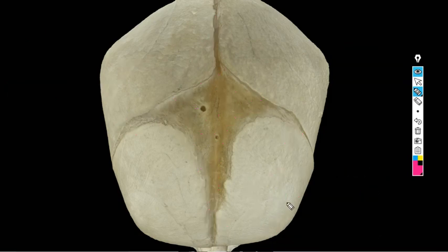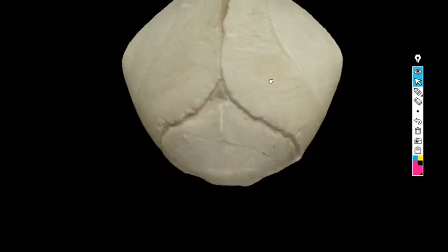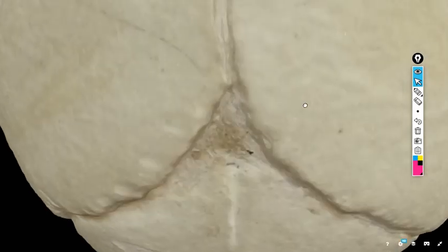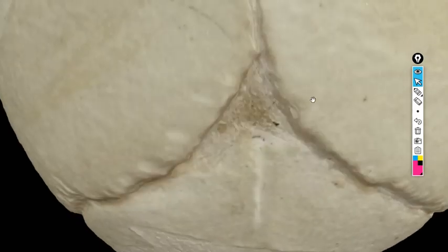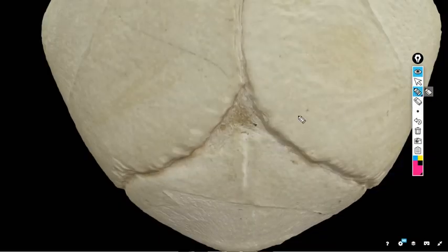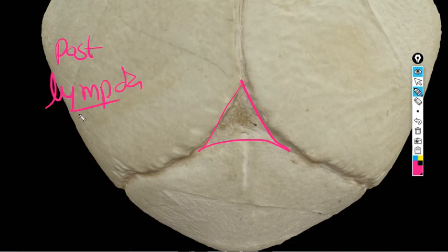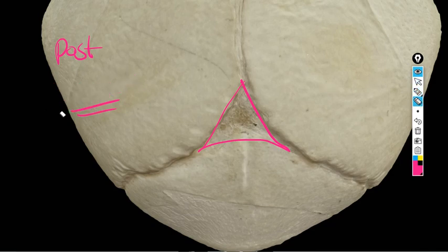Now if we go posteriorly, we find another fontanelle here, triangular shape fontanelle. This fontanelle is called the posterior fontanelle or lambda.